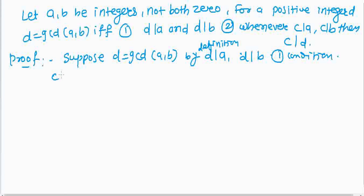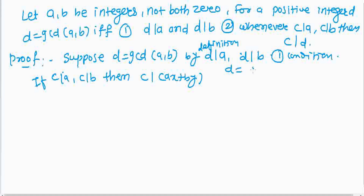For the second condition, suppose c is a divisor of a and c is a divisor of b. Then c is a divisor of ax plus by. Since d equals gcd(a,b), we have d equals ax plus by for some integers x and y. Therefore c is a divisor of d, and the second condition is satisfied.